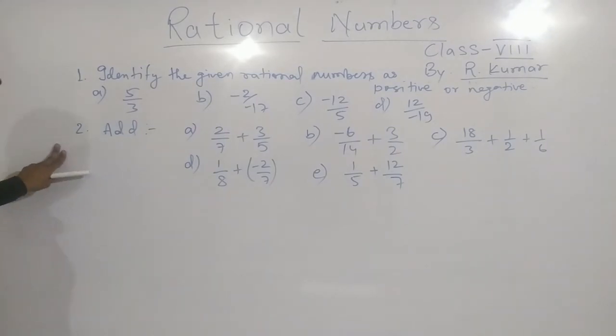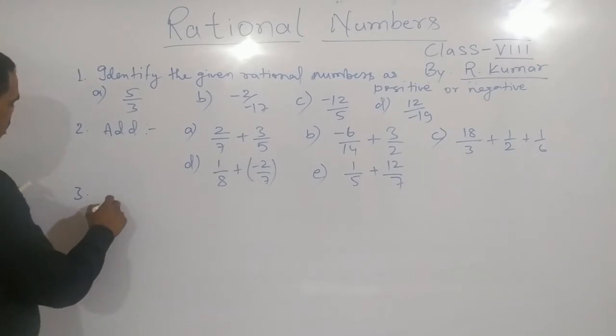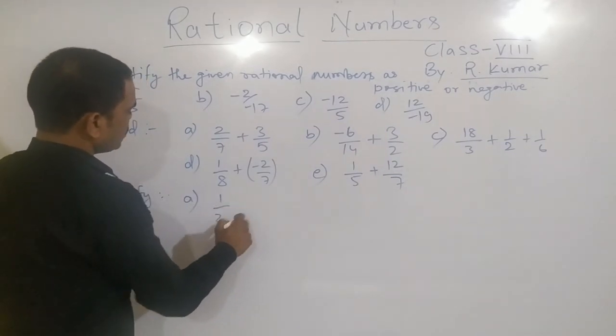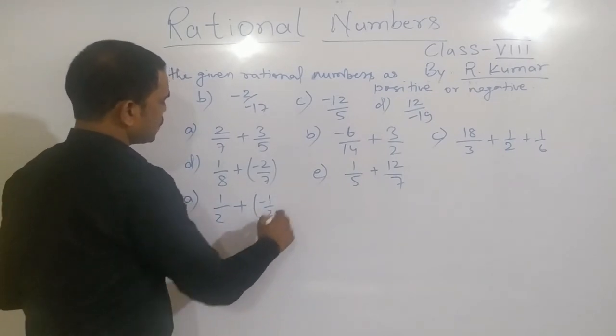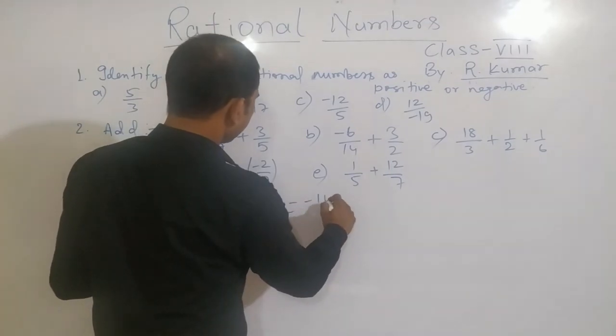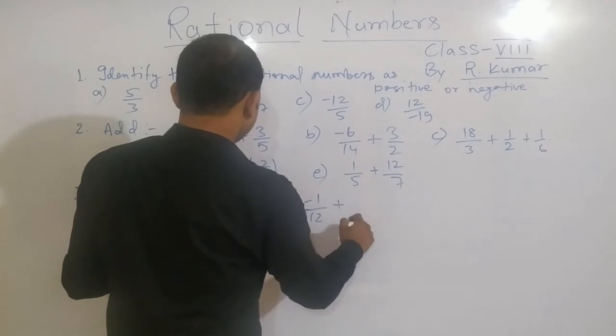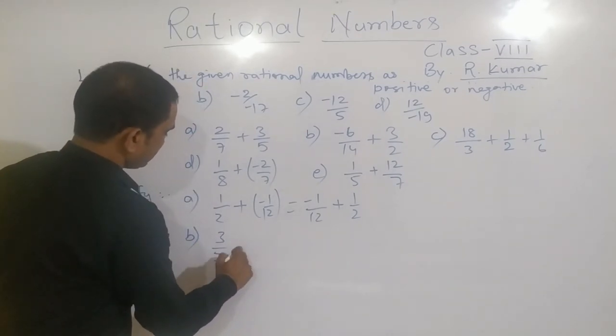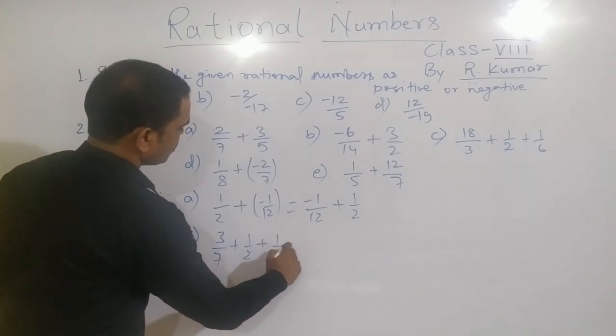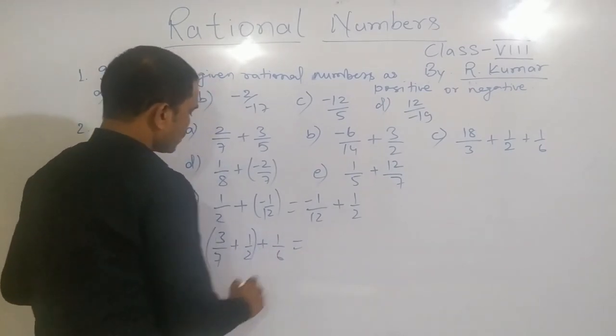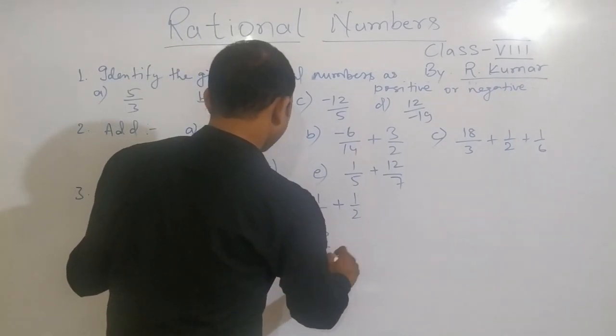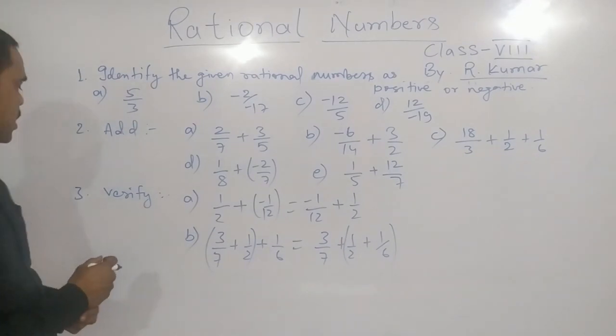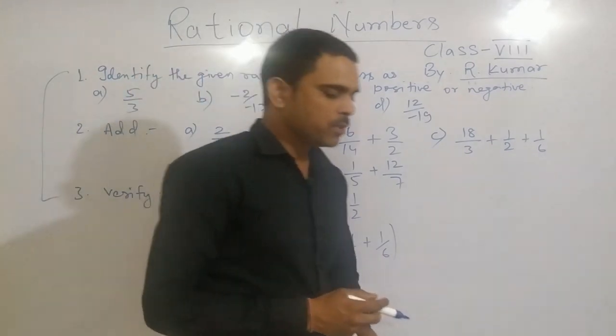Third question you have to verify: A, 1 by 2 plus minus 1 by 12 equals to minus 1 by 12 plus 1 by 2. B, 3 by 7 plus 1 by 2 plus 1 by 6 equals to 3 by 7 plus 1 by 2 plus 1 by 6. You can see order have changed so you have to do accordingly. So these three questions you do at home and you must write in the comments.